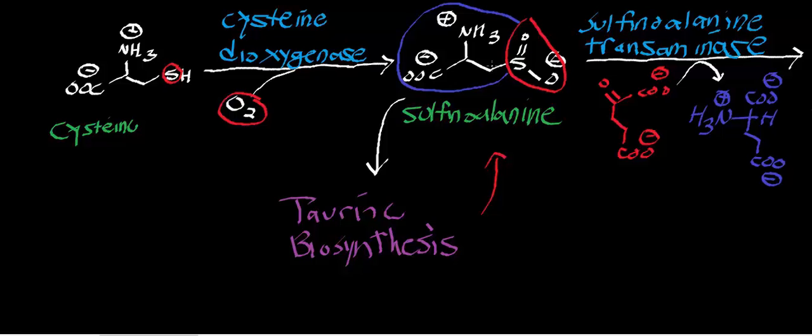And when you ubiquitinate a protein, what that means is you're transferring molecules of ubiquitin, which are other proteins, onto the protein itself. And when a proteasome, which is a molecular garbage can, when it recognizes a protein that has ubiquitin on it, it proteolyzes that protein.